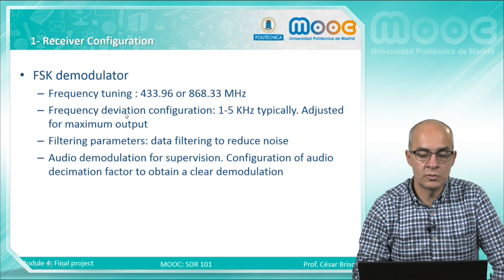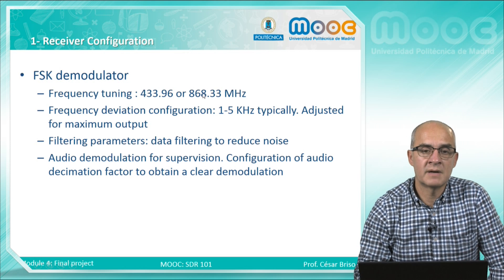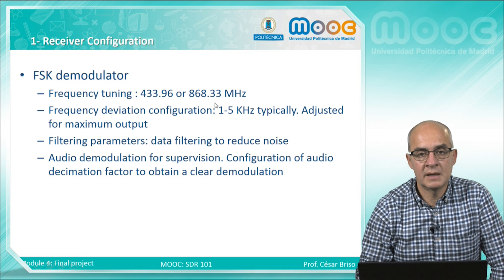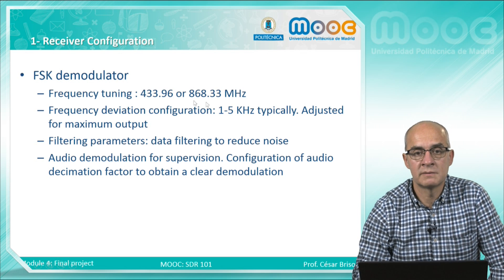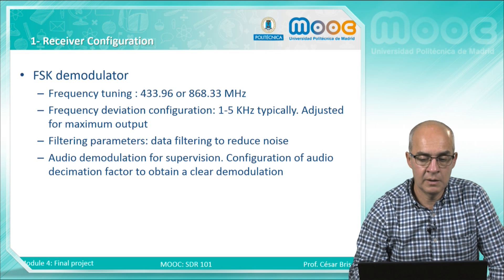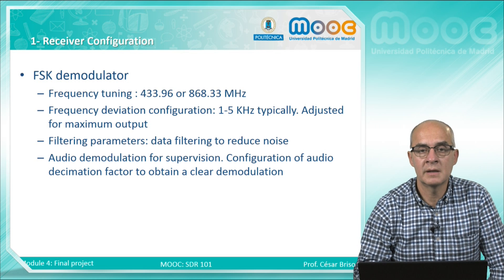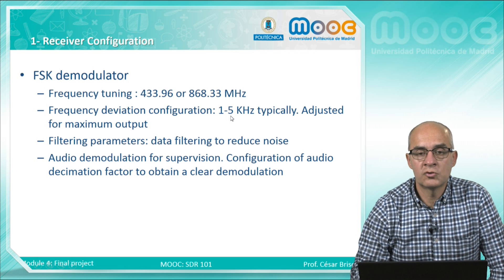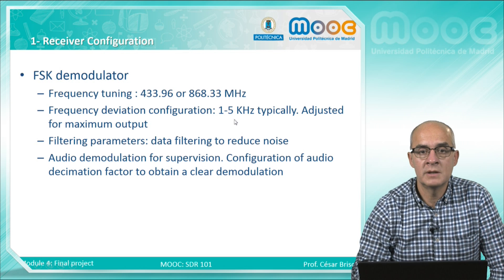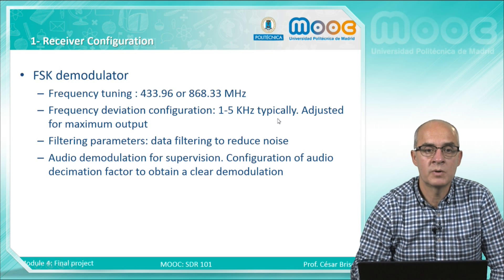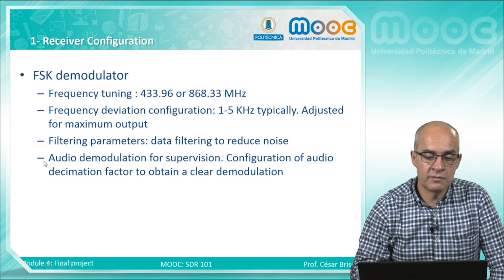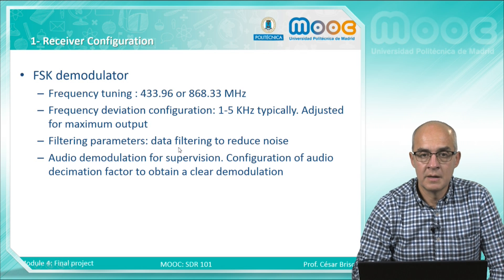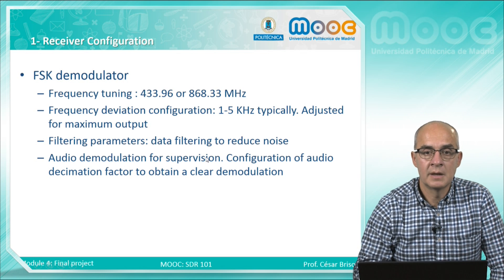Now, the FSK demodulator. The first thing is to search for the frequency of your remote control. First try these two frequencies, 433 and 868 MHz, and check if your control is there. Then make an accurate frequency tuning to center the frequency of your remote control. Some of them are not very stable, but you have to tune by hand the exact frequency of your remote control. Then we have to fit the frequency deviation — usually they use narrow band modulation and the frequency deviation is 1 to 5 kHz. We try to fix this frequency deviation for maximum output.